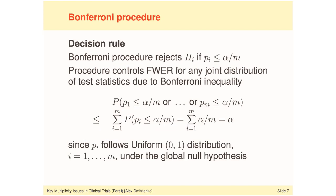As we said in module A, the basic idea behind any multiplicity adjustment is to keep the family-wise error rate at a pre-specified level, for example at a one-sided alpha of 0.025. This is accomplished by introducing more restrictive individual significance levels for the individual null hypotheses. The individual tests are no longer carried out at the full alpha — they need to be carried out at a fraction of alpha. The decision rule of the Bonferroni procedure is based on simply dividing the overall alpha by the number of tests or null hypotheses.